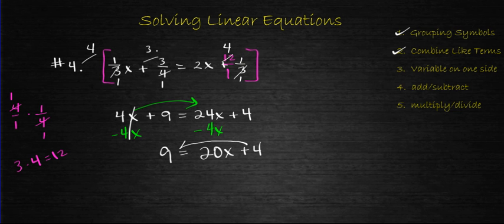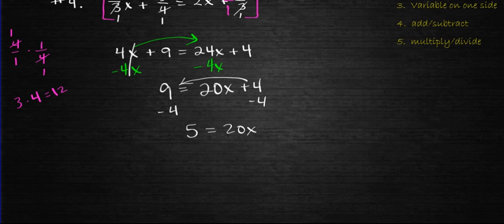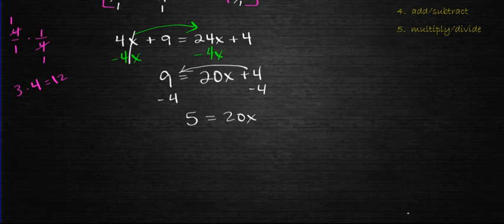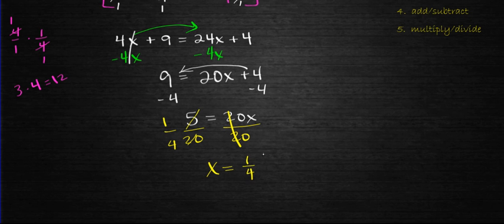Then when I move the positive 4 to the other side, I need to subtract, and I'm left with 5 = 20x. And here you have to be careful. 20 divided by 5 is definitely 4, but if you write a 4 as the answer, I hope you realize why you're going to get it wrong. This is the biggest mistake that my students make when they're going too fast. This becomes 1/4, not 4. And it sounds like a silly mistake, but I see it all the time. So just be careful.